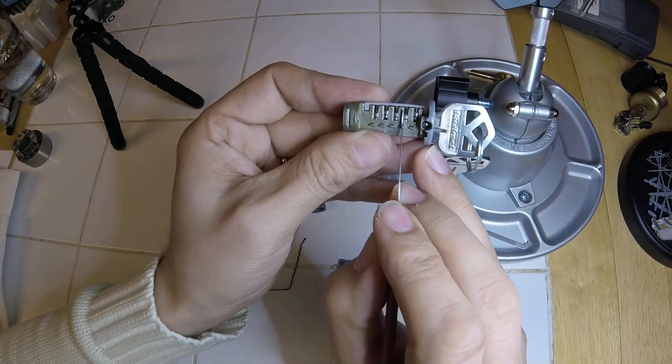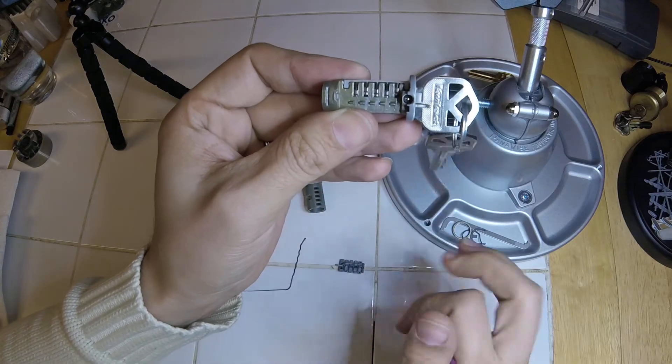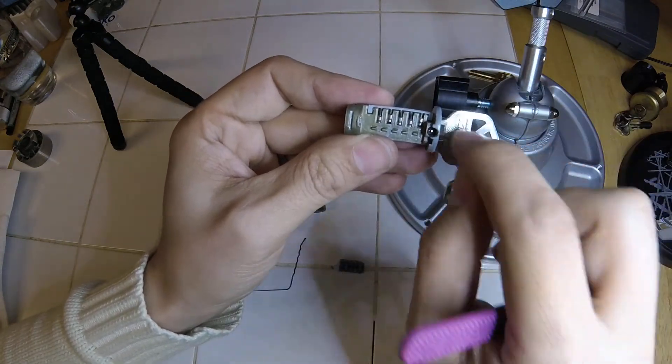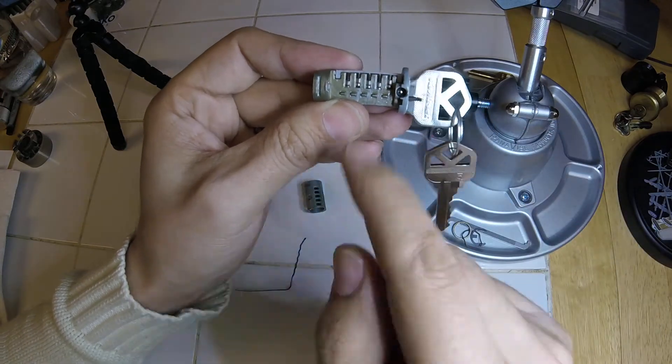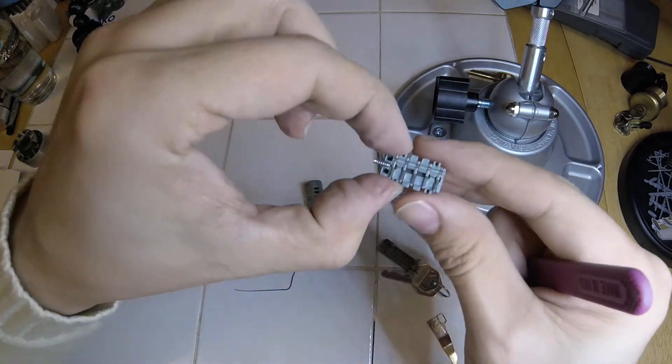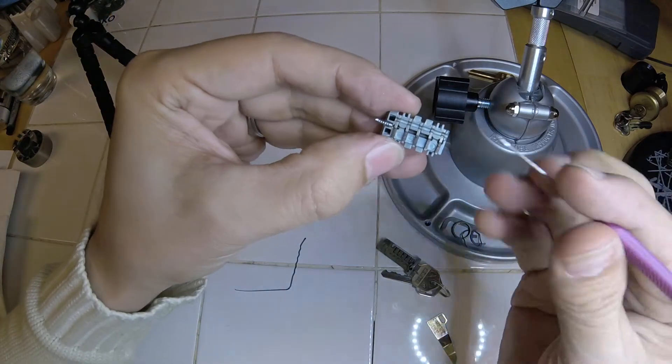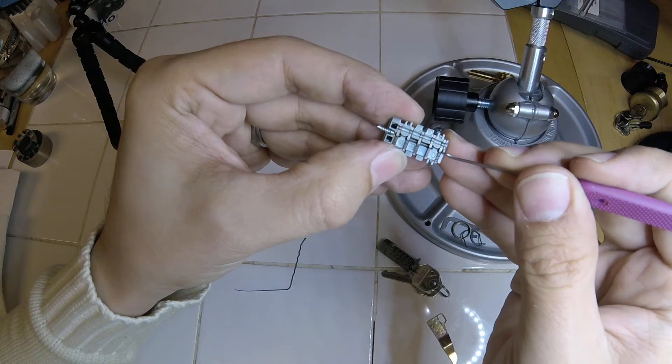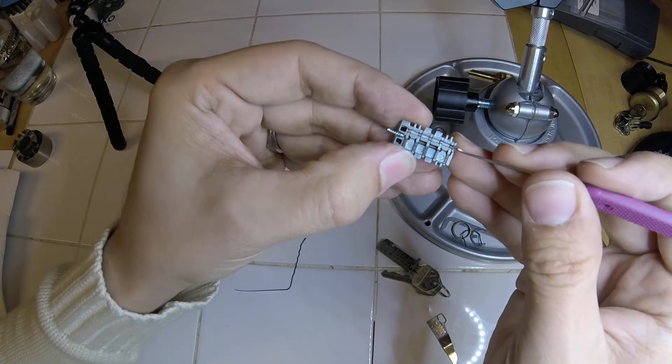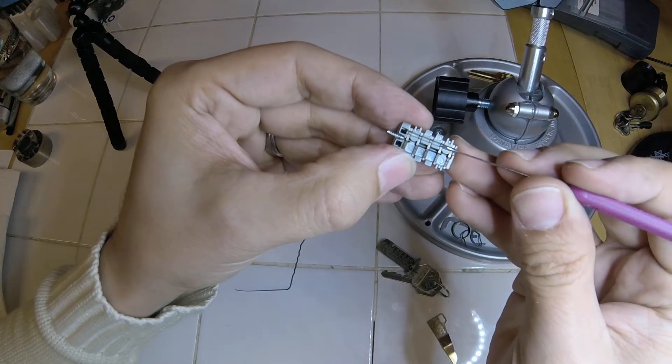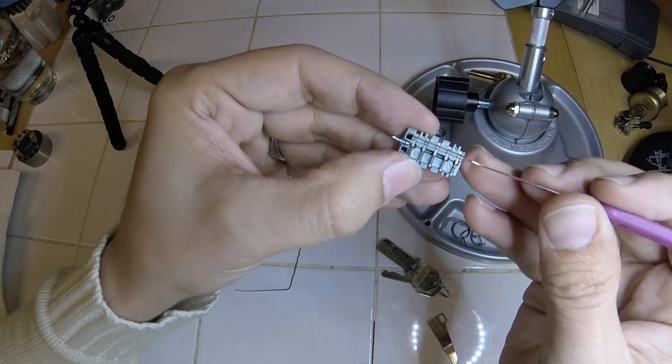Instead, they're lined up here in these gaps. That way you can put a key in, lift these fingers up to any height that the key is. And then when you move it back, those fingers will be configured to one of these little grooves in each of these wafers. When all these wafers are lined up with the sidebar, the sidebar can drop into this hole here.